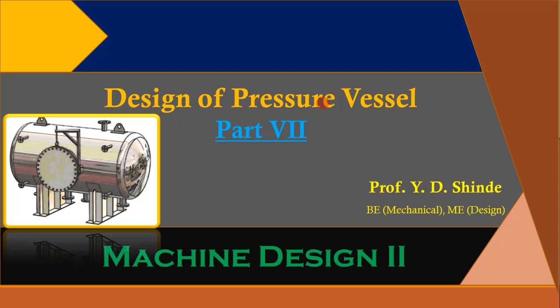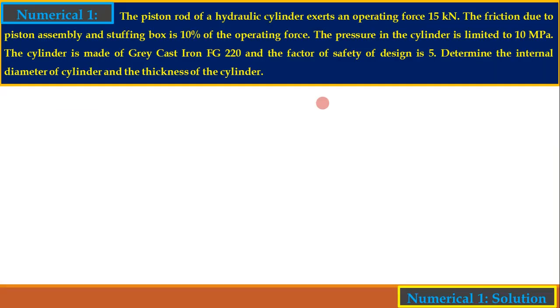As a summary: if cylindrical shell or spherical shell is given, it is a thin cylinder problem. If other practical examples are given, it is generally a thick cylinder. Additionally, for thin cylinder problems, weld joint efficiency and corrosion allowance will be given, but for thick cylinder numericals these two parameters will not be given. Remember these points before solving.